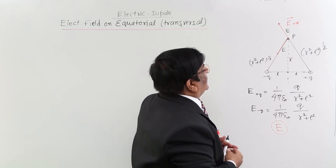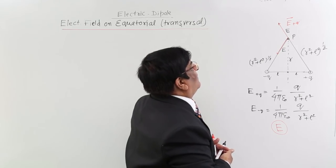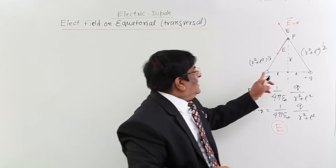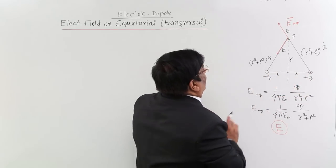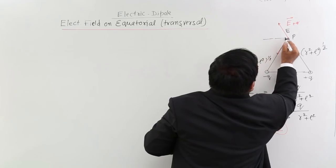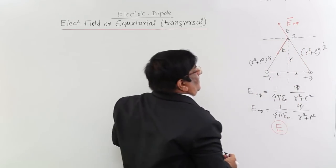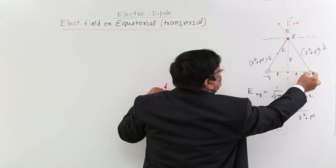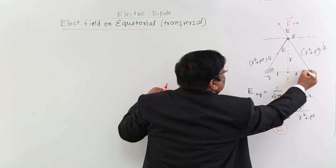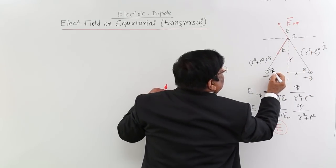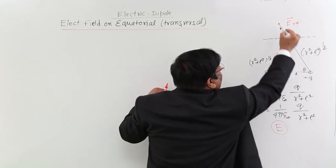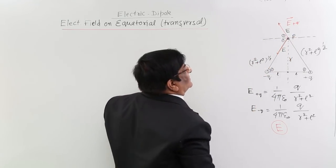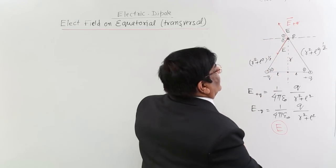To find the resultant, we apply vector addition. I draw a line parallel to one of the vectors at the tip of the other. Since P lies on the equatorial line, the geometry is symmetric — the angle each electric field vector makes with the perpendicular (equatorial line) is the same angle theta. Using alternate angles and corresponding angles from the parallel lines, theta appears at multiple points in the figure confirming the symmetry.